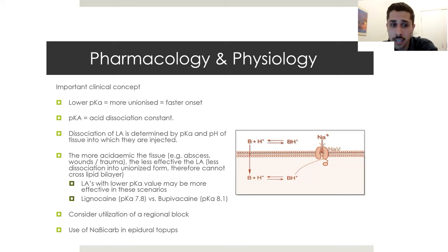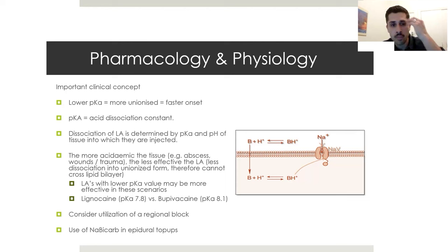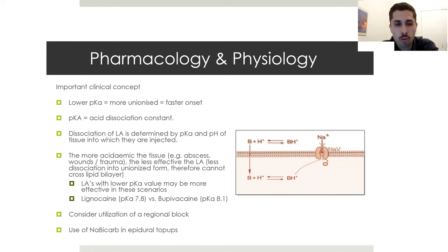The pKa of LAs ranges between about 7.7 and 8.1. Lignocaine has a pKa around 7.8 - closer to 7.4 - so it has a faster onset of action. Bupivacaine has a pKa of 8.1, giving it a slower onset. Regarding tissue pH: the more acidic the tissue, the greater the discrepancy between pH and pKa, and the less effective the LA. Abscesses, significant wounds, or trauma cause tissue acidification, making it harder for the LA to work because less of it dissociates into the unionized form.